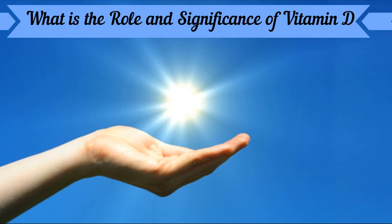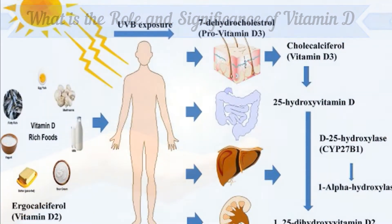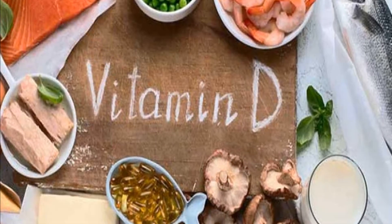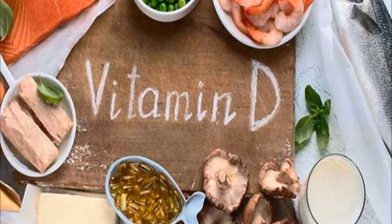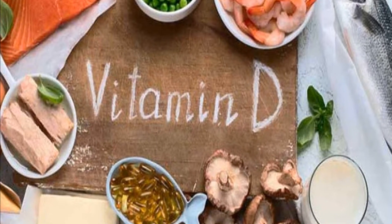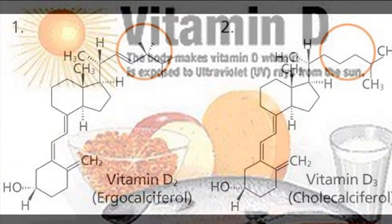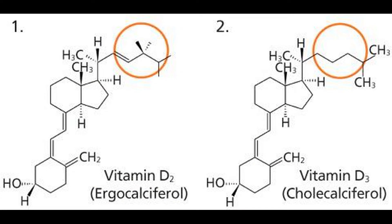What is the role and significance of vitamin D? Vitamin D was first recognized by McCollum as a component of good fats that cured rickets. Chemically, compounds with vitamin D activity are sterols. The two important forms of the vitamin are vitamin D2, i.e., ergo-calciferol of plant origin, and vitamin D3.